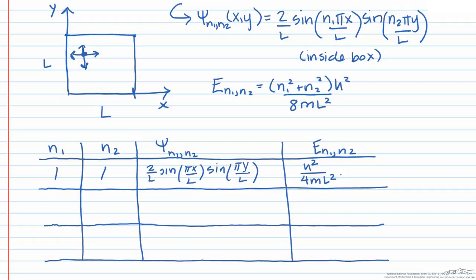Next, let's take a look at the n₁ equals 1 and n₂ equals 2 state. This state has the following wave function, and the corresponding energy is 5h² over 8mL².